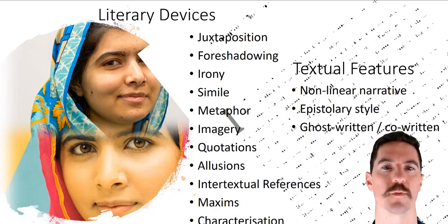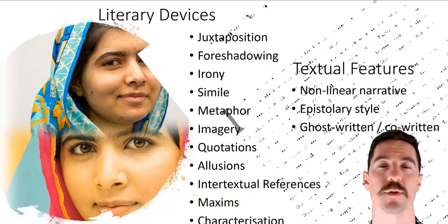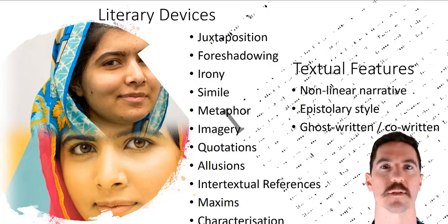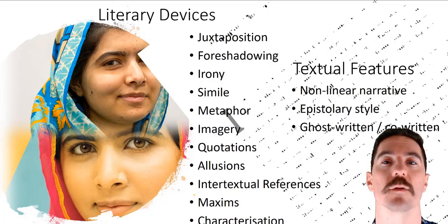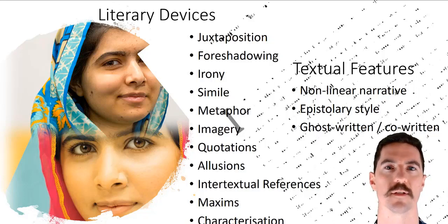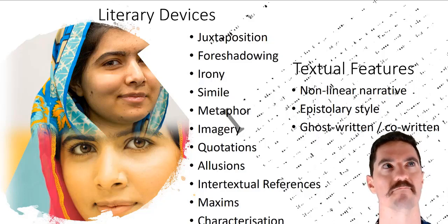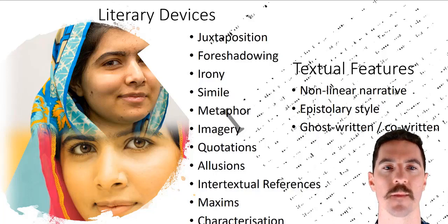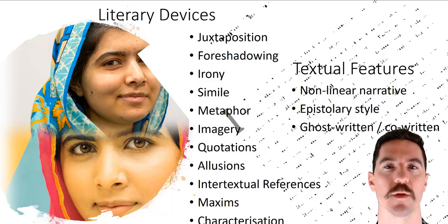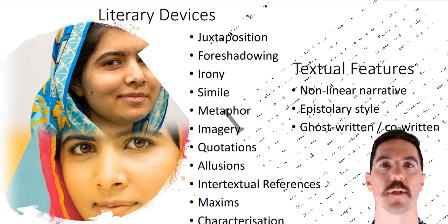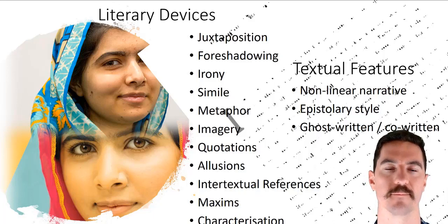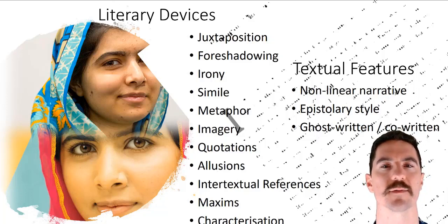Think about imagery as well — she uses a whole range linked to the motifs and symbols. She uses a great deal of quotations from other people: famous figures like Abraham Lincoln and Martin Luther King. She uses allusions to texts — referring to a text without actually naming it — and intertextual references, where she specifically gives the title, which she does a lot because she's a big reader and believer in education. Maxims are key sayings rather than quotations. Characterization covers how she describes her father, mother, teachers, and the generals and dictators she meets. And look for internal monologue in italics, when she runs through thoughts in her head rather than presenting the narrative.